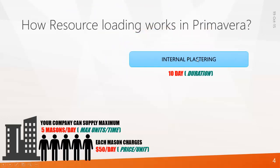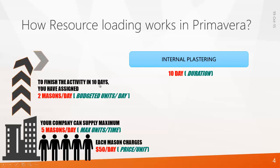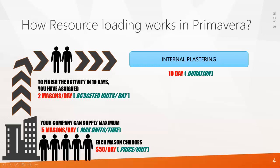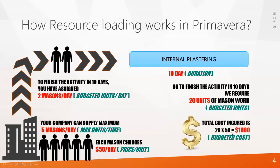Let's say there is an activity called internal plastering that is to be completed within 10 days. This 10 is called duration in Primavera. To finish the activity in 10 days, you assign 2 masons per day — that's the productivity — which is called budgeted units per day in Primavera. So 2 masons working per day for 10 days makes 20 units of mason work, called budgeted units. The total cost becomes 20 times $50, which is $1,000 — that is the budgeted cost in Primavera. This is how Primavera works with resources.